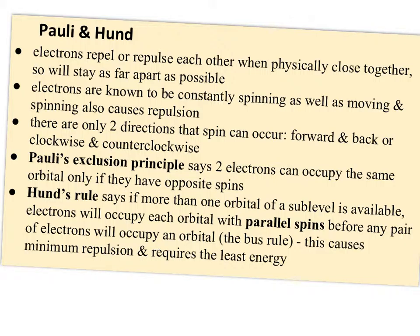Hund's rule says if there's more than one orbital of a sublevel available, and remember, if there's more than one orbital, they're the same energy and the same shape. He said then electrons will occupy each orbital with parallel spins before any pair of electrons will occupy another orbital. So it's sometimes thought of as the bus rule. It's just think of it as seats on a bus. Nobody's going to double up in a seat on a bus until every seat has one person in it. So all the orbitals will have one electron before any pair of electrons will occupy an orbital. And that's because this creates minimum repulsion and requires the least energy.